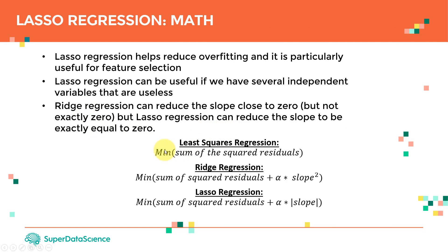To summarize: least squares minimizes the sum of squared residuals. Ridge regression minimizes the sum of squared residuals plus alpha times slope squared. Lasso regression minimizes the sum of squared residuals plus alpha times the absolute value of the slope.